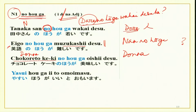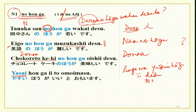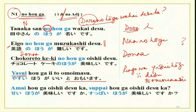Yasui hou ga ii to omoimasu — anything cheap is better. For example buying apples: ringo wa yasui hou ga ii desu or ii to omoimasu. Amai hou ga oishii desu ka, suppai hou ga oishii desu ka — is it sweeter or more sour that tastes better? Eigo no hou ga muzukashii desu ka, nihongo no hou ga muzukashii desu ka — is English more difficult or Japanese? This is hou ga with adjectives.